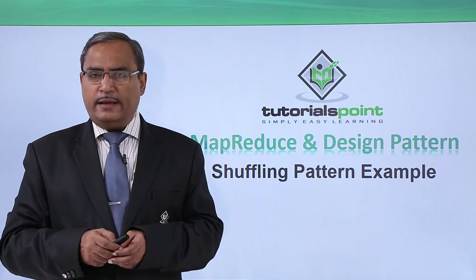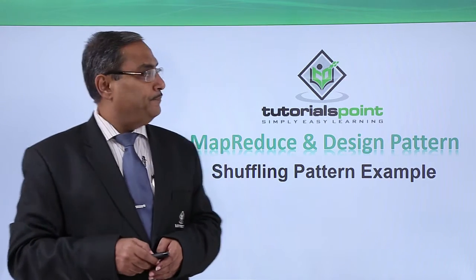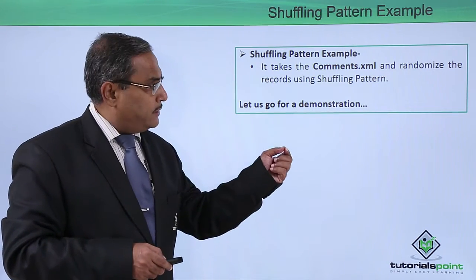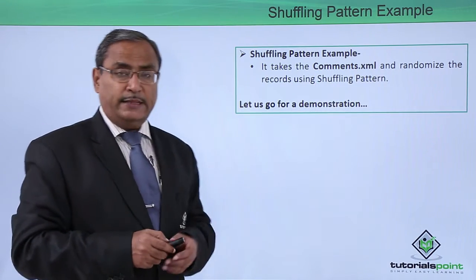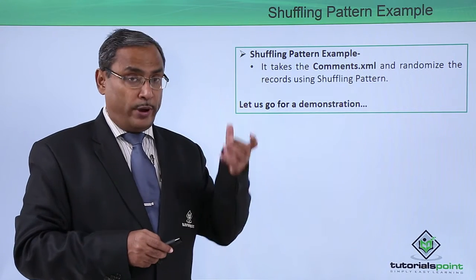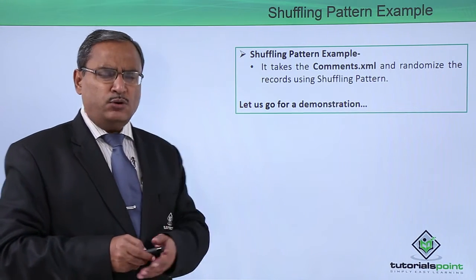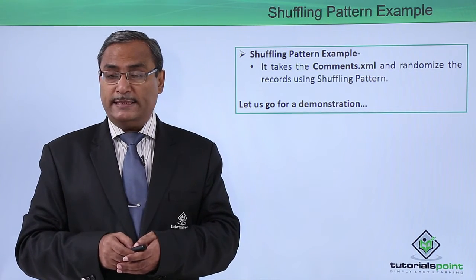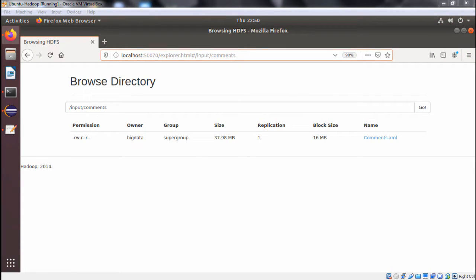In this video we are discussing the Shuffling pattern example. We will be implementing the Shuffling design pattern, taking the comments.xml file and randomizing the records using the Shuffling design pattern. Let us go for one practical demonstration to show how the Java code can be written, executed, and how the outputs can be obtained. This is the Shuffling pattern example under the data organization design pattern.